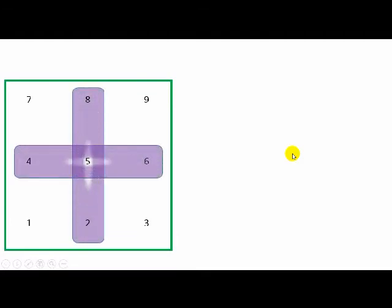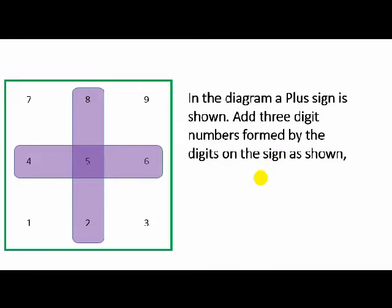Here, I form a plus mark on it and then take the three digit numbers formed out of the digits on this plus mark as 852, 258, 456 and 654. I add them together and to my surprise, I again got the same answer 2220.